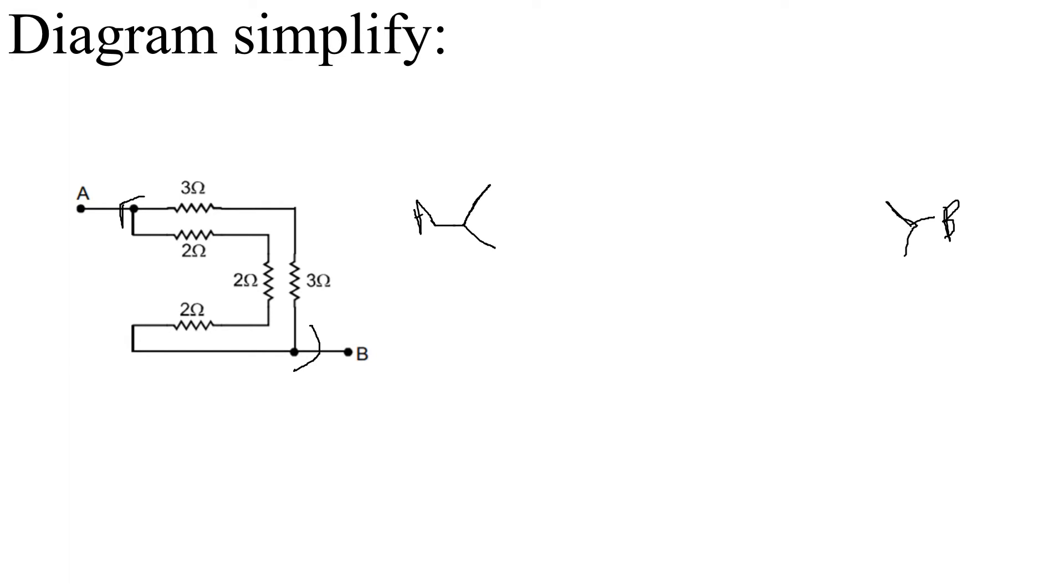And we can see in the first part there are two 3-ohm resistors. So this is the first resistor, the second resistor. And in the second part there are three 2-ohm resistors. So this is the first one, second one, third one.